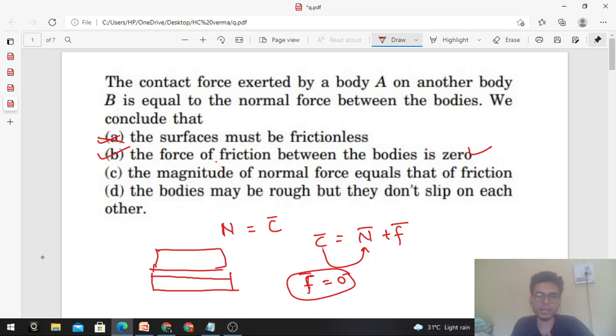Therefore friction is zero, right? So normal force will not be equal to the friction force. Rather, normal force will be equal to contact force and friction will be zero. So option C is also not correct. The bodies may be rough but they don't slip on each other.